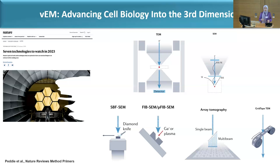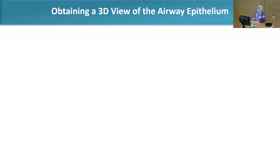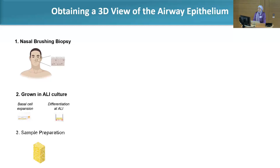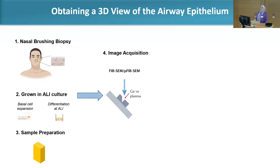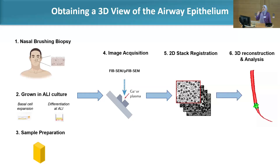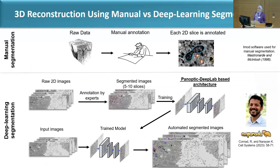In the Menela lab we study the airway epithelium, which plays an important role in protecting our lungs from bacteria, viruses, and environmental pollutants. To collect samples, we do nasal brushing or surgical biopsy, then grow the sample in culture or perform fixation. We then prepare resin blocks, do image acquisition using FIB-SEM — which provides isotropic resolution — and collect 2D registered images before 3D reconstruction and analysis.